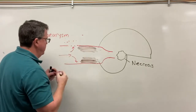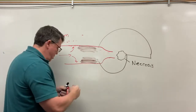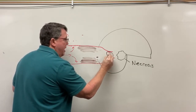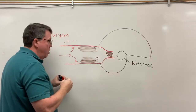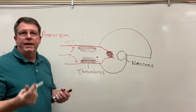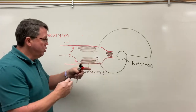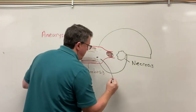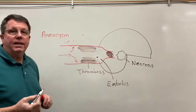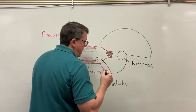The thrombosis can also have a piece break off and travel into the bloodstream. Thrombosis is essentially a blood clot due to plaque building up on the artery walls. When this piece is traveling in the bloodstream it's called an embolus, and when it gets stuck somewhere it's called an embolism.